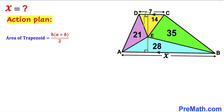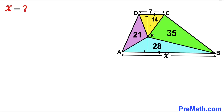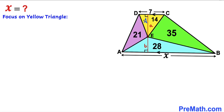Our task is to calculate the height H, represented by the red line that passes through point A. We can observe that this perpendicular red line passes through both the yellow triangle and the blue triangle. So let's call this length in the yellow triangle lowercase a, and this length in the blue triangle lowercase b. Let's focus on the yellow triangle and recall the area of a triangle formula: Area equals one-half times base times height. In our case, the area of the yellow triangle is 14, the base is 7, and the height is lowercase a.